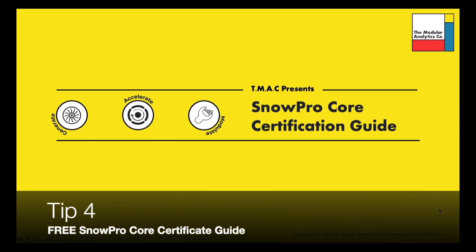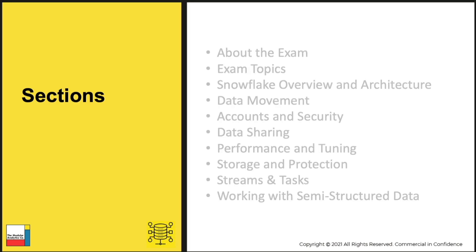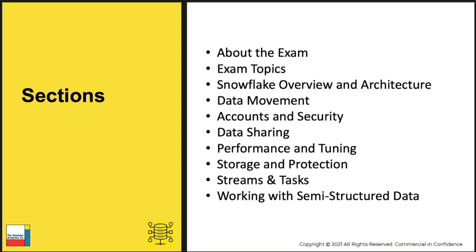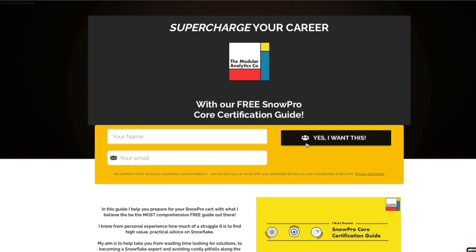Tip number four is our very own SnowPro Core Certification Guide — a completely free PDF available to you. It's 38 slides in total and covers each one of the sections in the certification, plus a little more, with links to the relevant YouTube videos on the channel. To get it, there's a link below — it's snowpro.adamorton.com.au/snowpro. Just pop your name and email address in and click the button, and we'll automatically email you the PDF.